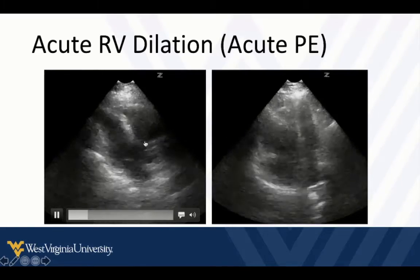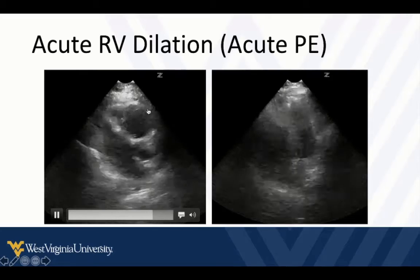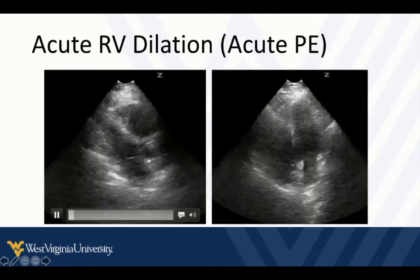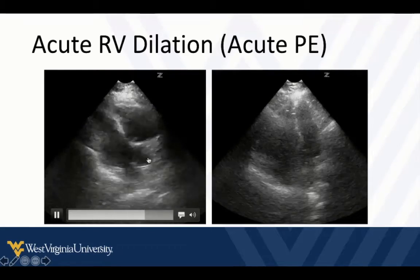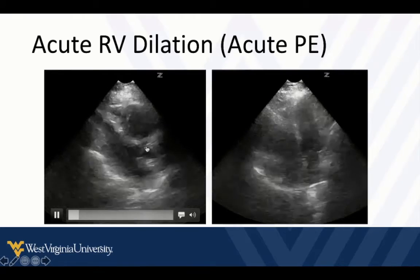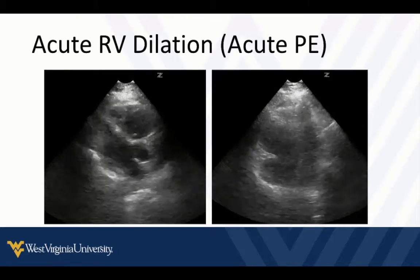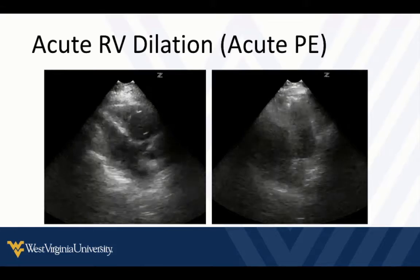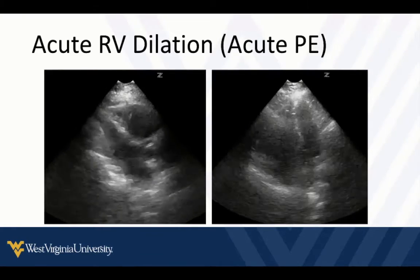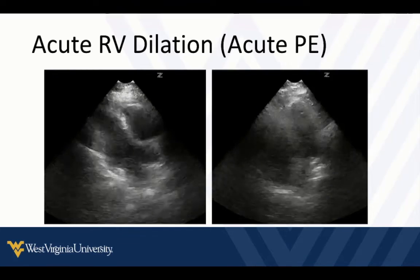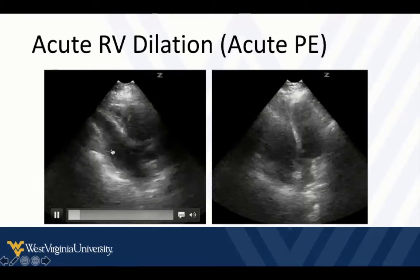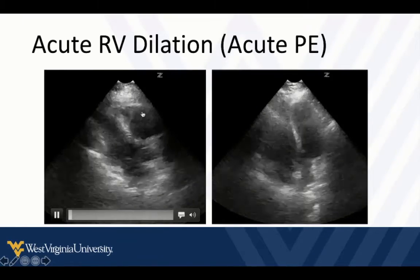In the parasternal long axis view, we see this big massive right ventricle that's compressing the left. To confirm this is a true parasternal long axis view and not a false positive, we should see most of the length of the left ventricle, the mitral valve, and the aortic root. If the probe drifts pointing too much toward the feet, it can bring the right ventricle into view and falsely make it look prominent.